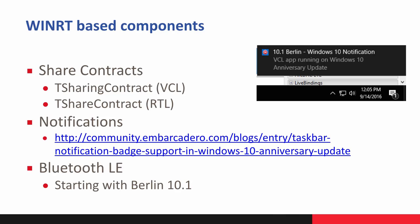You don't have to do low-level calls in most situations. You can just use some of the WinRT-based components we've provided. We have the TSharingContract VCL component and the TShareContract class in RTL, which can be used from VCL, FireMonkey, console applications, services, and anywhere else. We have a notification component so that you can have Windows 10-style notifications. Also introduced in Berlin was Bluetooth LE support — there's a Bluetooth LE component in addition to the existing Bluetooth component that works on Windows 10.